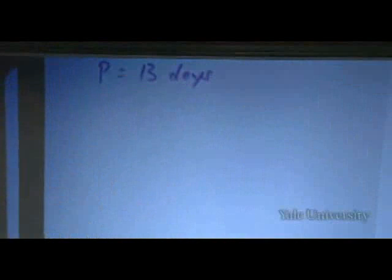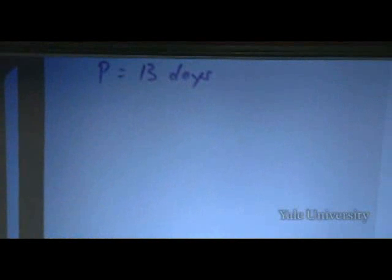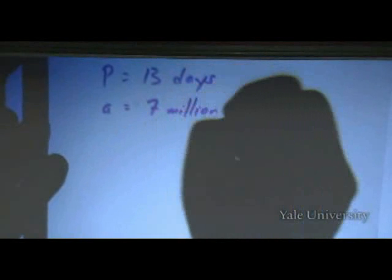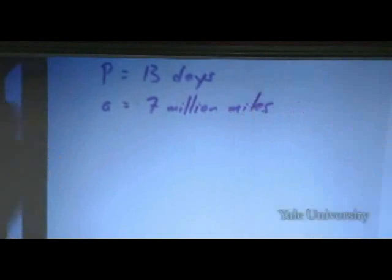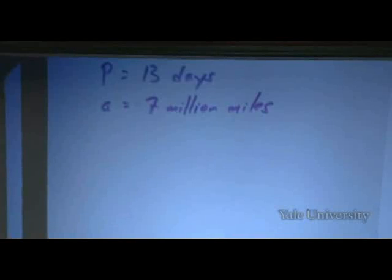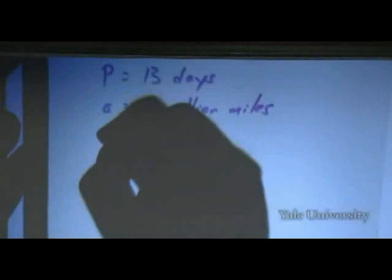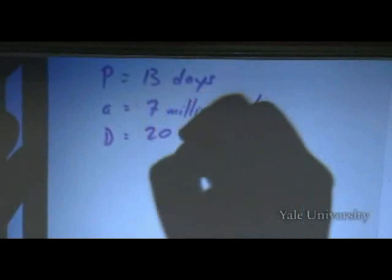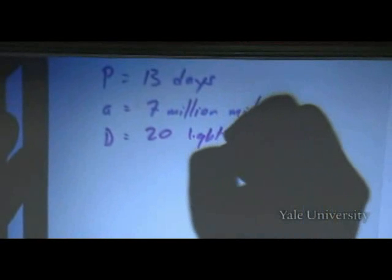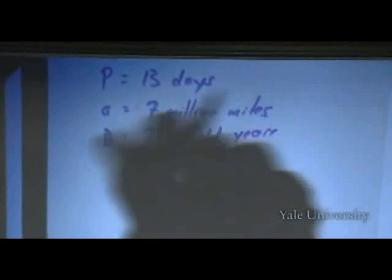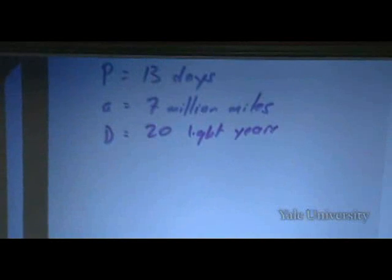The information given there is that the orbital period is about 13 days. The distance between the planet and its star—that's the semi-major axis—is given as 7 million miles. These are, of course, not the world's best set of units. The distance to the system is 20 light years. That's really close. Somebody's quoted in the article as saying we could go there.